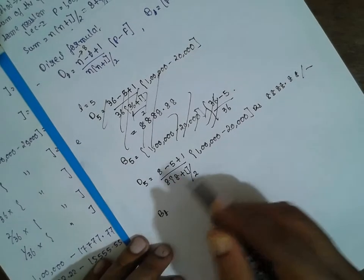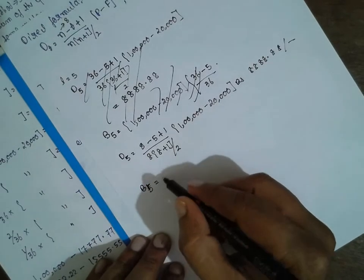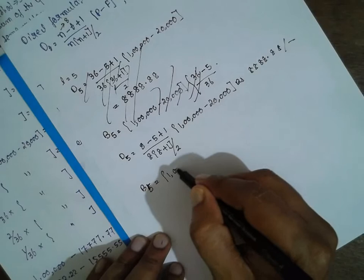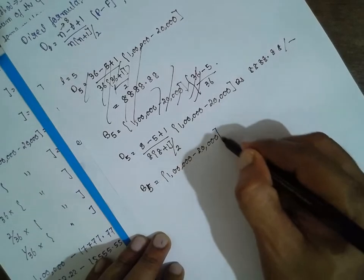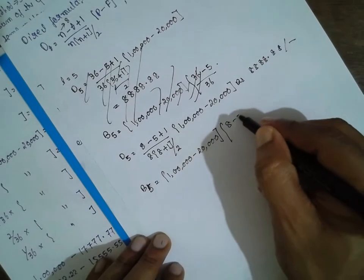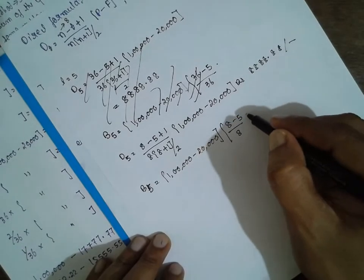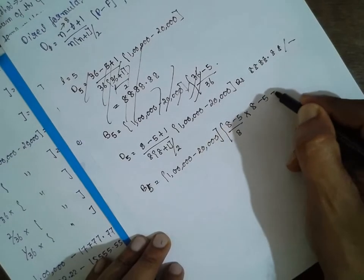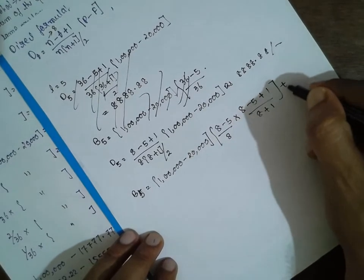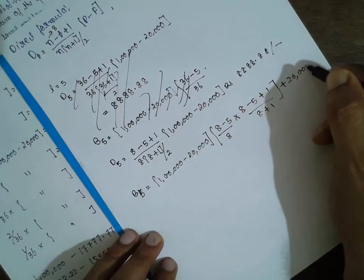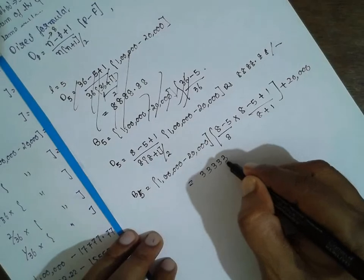For the book value at t = 5 using the direct formula: b5 = (P − F) × [(n − t)(n − t + 1) / (n(n+1))] + F = (1,00,000 − 20,000) × [(8−5)(8−5+1) / (8×9)] + 20,000 = 80,000 × [3×4/72] + 20,000 = 33,333.33.